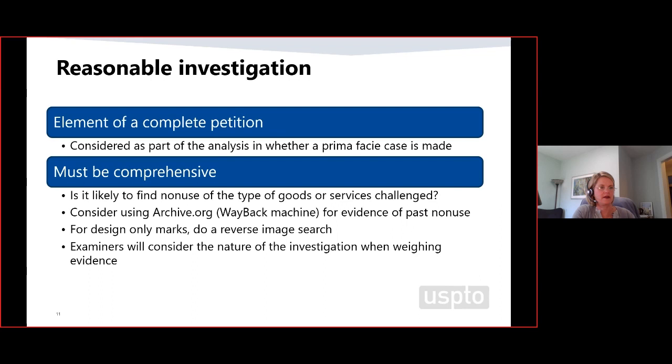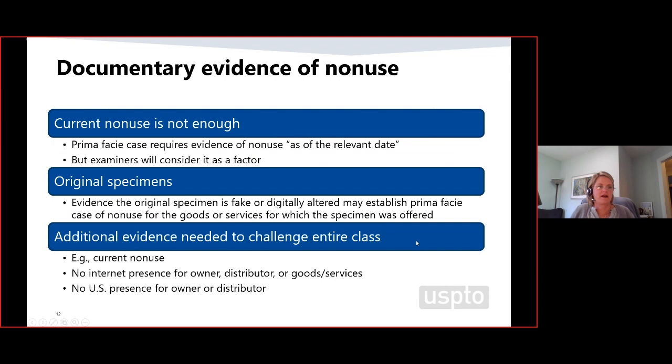Current non-use is not enough. We've gotten several petitions with only an investigation of current non-use and documentary evidence of current non-use, but it doesn't establish by itself a prima facie case of non-use as of the relevant date in the past. We can consider it as part of a larger body of evidence as examiners weigh that prima facie case.